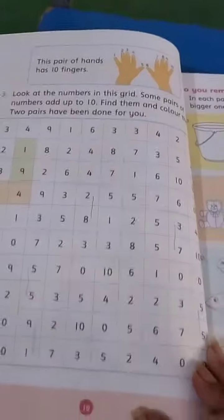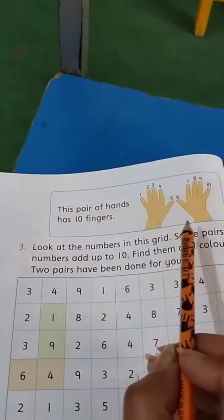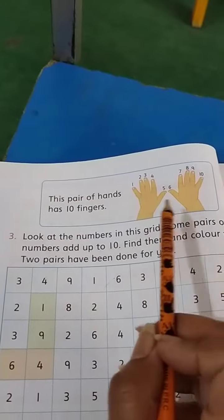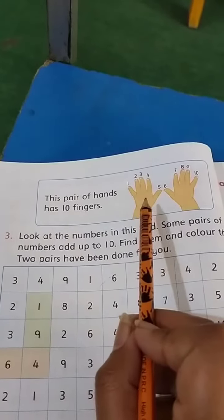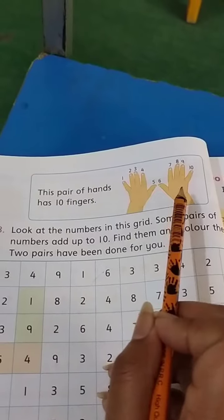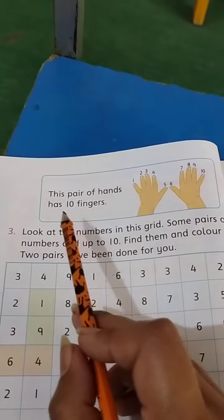Page number is 10. So first of all we have to write down date. There we can see the hands. In one hand there is 5 fingers and in other hand there is also 5 fingers. 5 plus 5 is equal to 10.